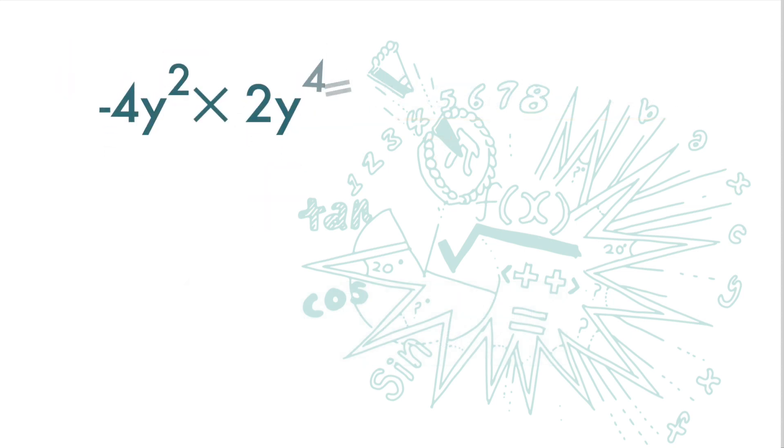So now let's look at this question. Let's multiply the numbers first. Negative 4 times 2 is negative 8. For y to the power of 2 times y to the power of 4, we add up the indices, 2 and 4. And we get negative 8y to the power of 6.